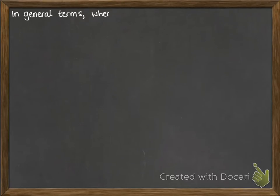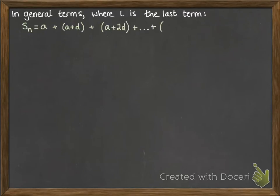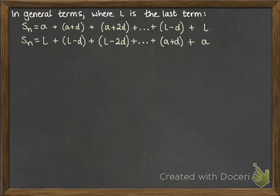Now think about this in general terms. If we talk about L being the last term in a sequence, then you can rewrite those terms like this. So, S sub n, that just means the sum of the first n terms. So, that would be A plus the second term, which is A plus D, plus the third term, which is A plus 2D, and so on. Until you've got the last term, and then the second to last term would be L minus one of the differences. If we rewrite that backwards, then it looks like this. And then we go through that same process. If we add those two lines together, then you get 2 lots of the sum of the first n numbers.